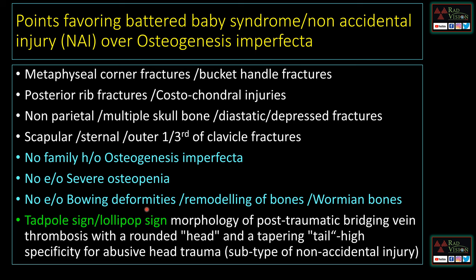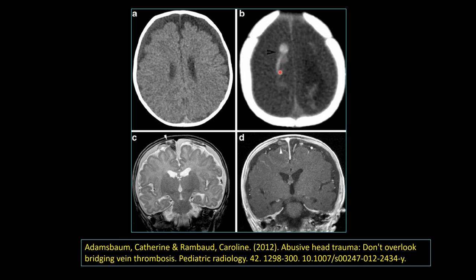One important sign to remember is the tadpole sign or lollipop sign, which represents bridging vein thrombosis leading to subdural hemorrhage in a child suspected of abusive head trauma or non-accidental trauma. The thrombosed bridging vein forms the tail of the tadpole, and the hemorrhage at the tip of the bridging vein forms the head. Chronic subdural hygromas and hemorrhages are also seen. Remember these findings in non-accidental trauma, battered baby syndrome, or shaken baby syndrome.